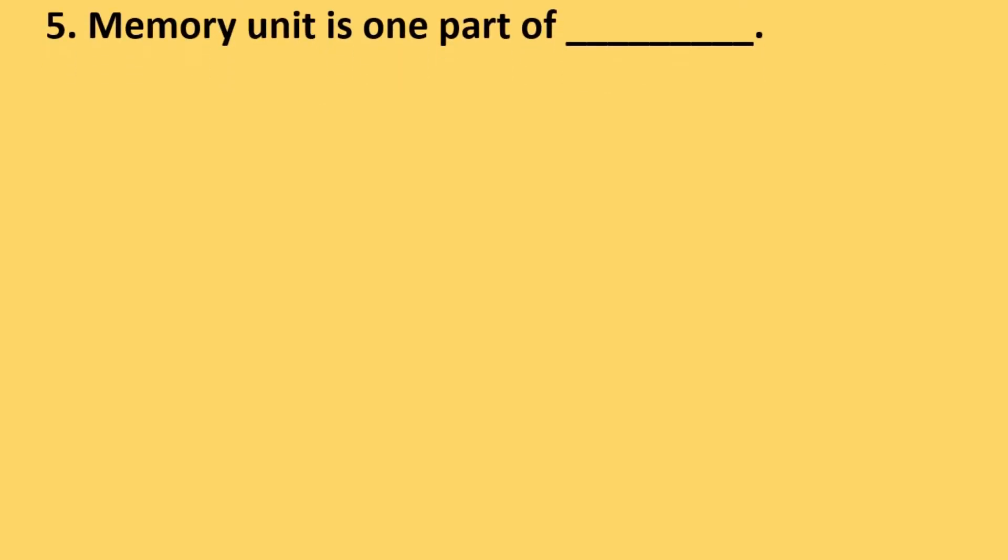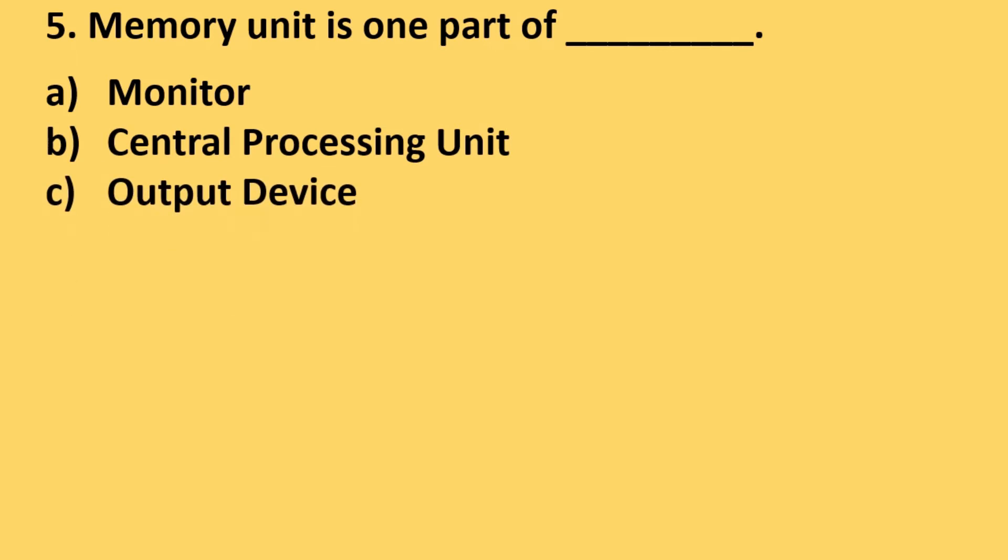Question number 5: Memory unit is one part of - options are monitor, central processing unit, output device and keyboard. The correct answer is option B, central processing unit.